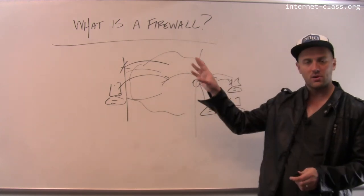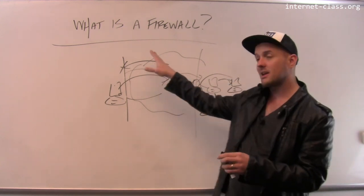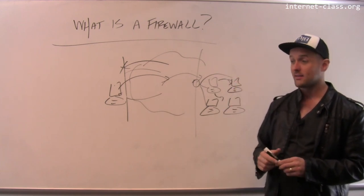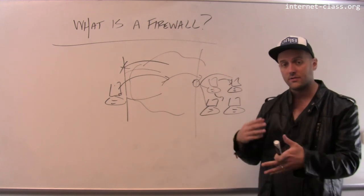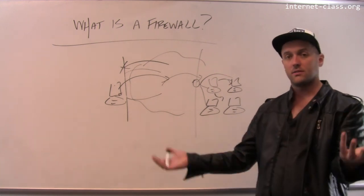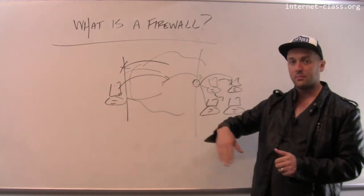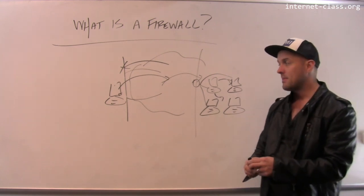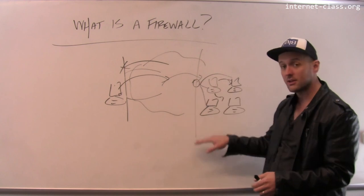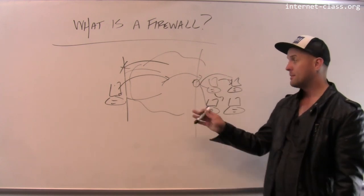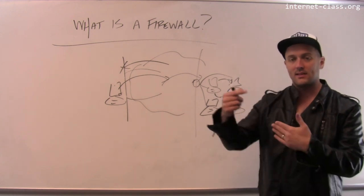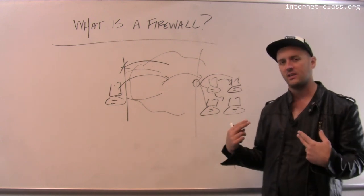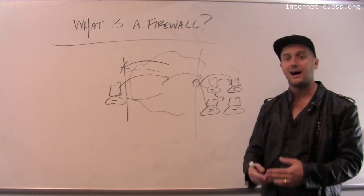So firewall — very simple concept: just prevent certain types of connections. Firewalls can get arbitrarily complex; they can block based on all sorts of different reasons, and as internet protocols have evolved, firewalls have gotten more sophisticated. They may block traffic that looks suspicious and perform a lot of intelligence at the firewall itself. But in the simplest case, all you're doing is looking at the destination port — if that port is open, you let the connection proceed; if that port is blocked, you drop it.